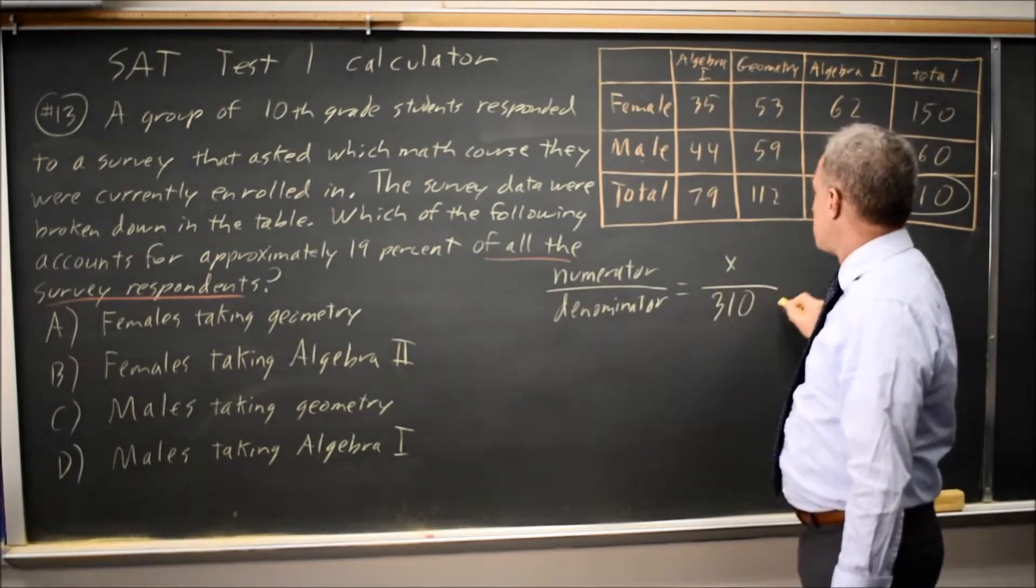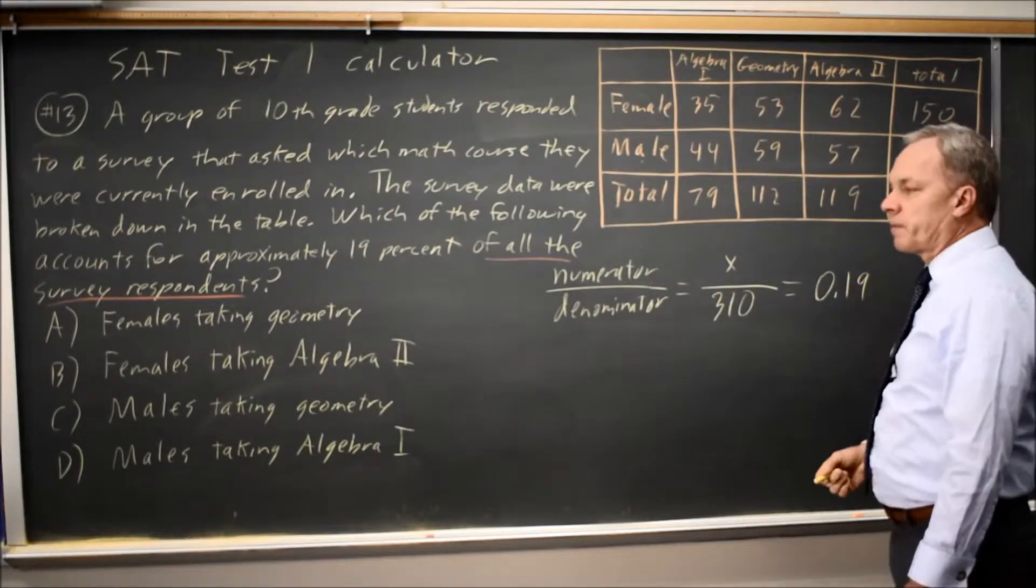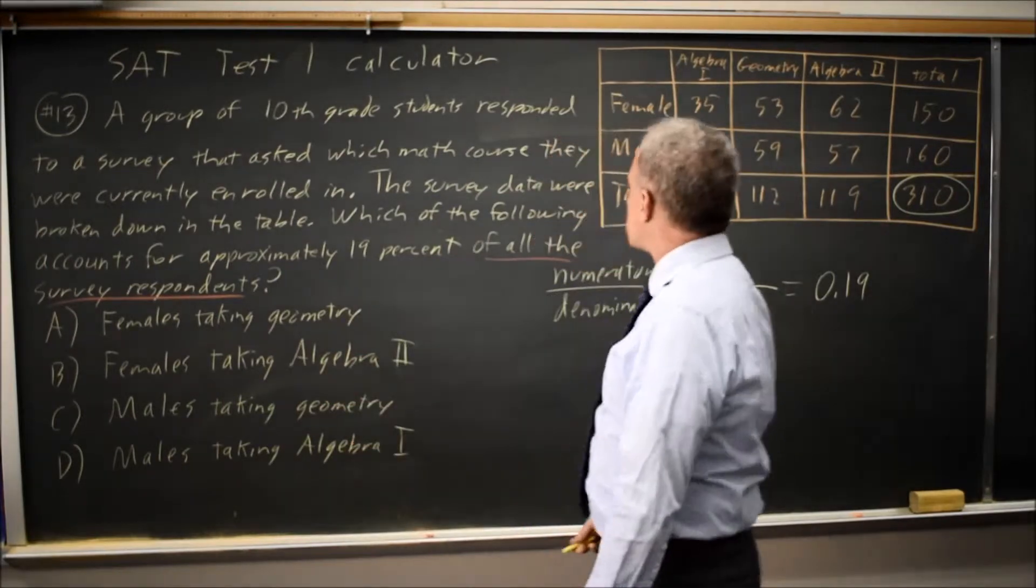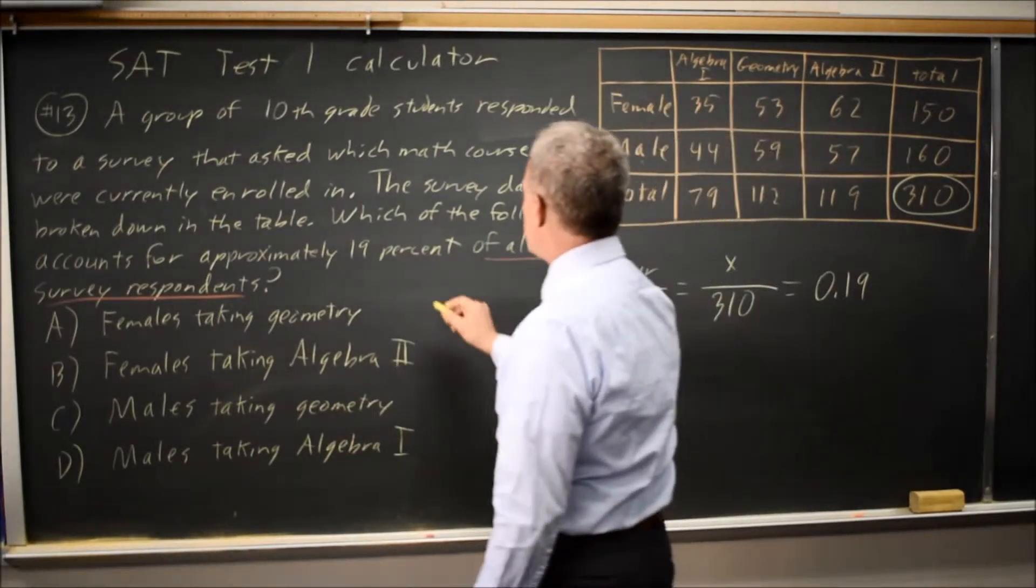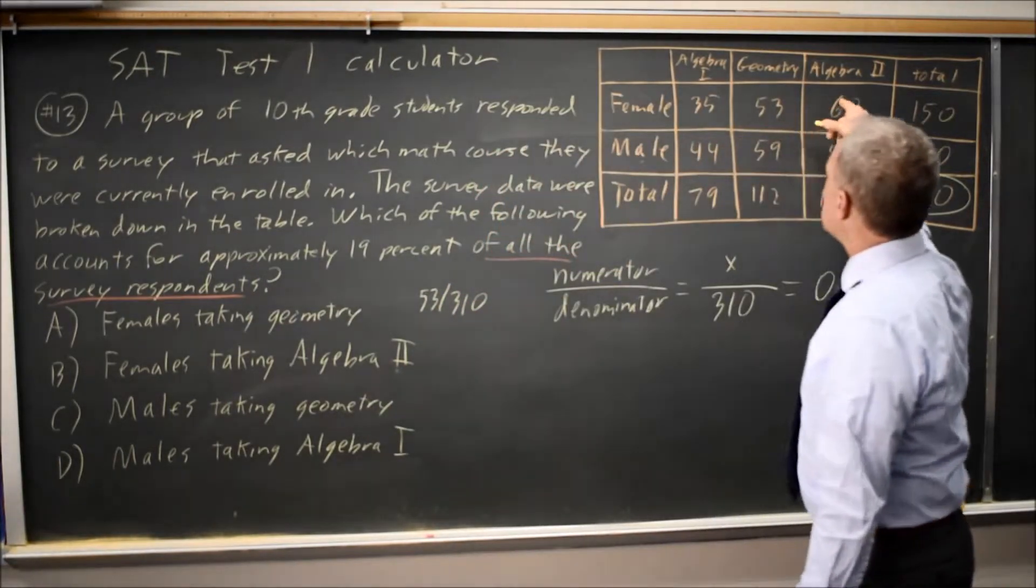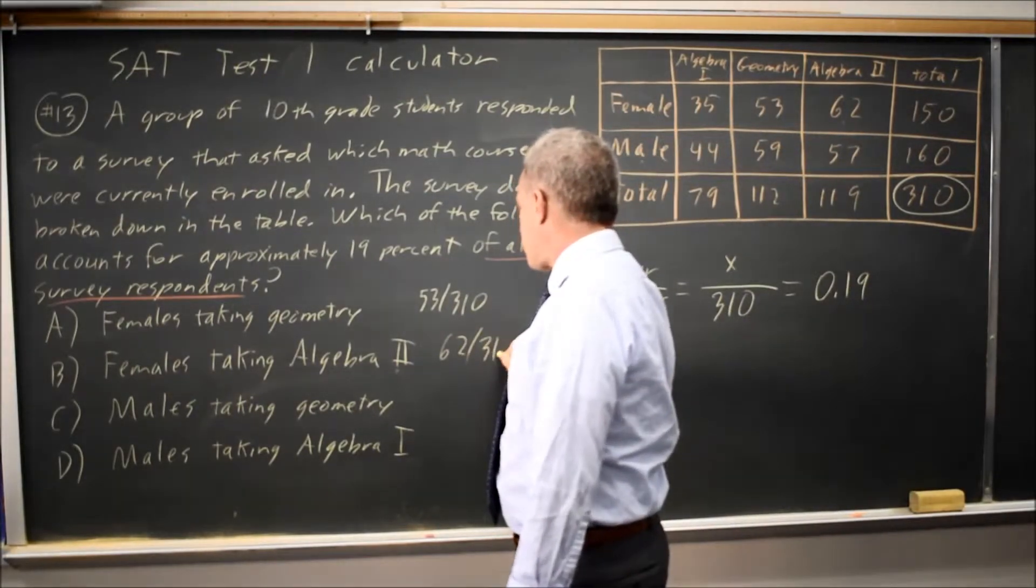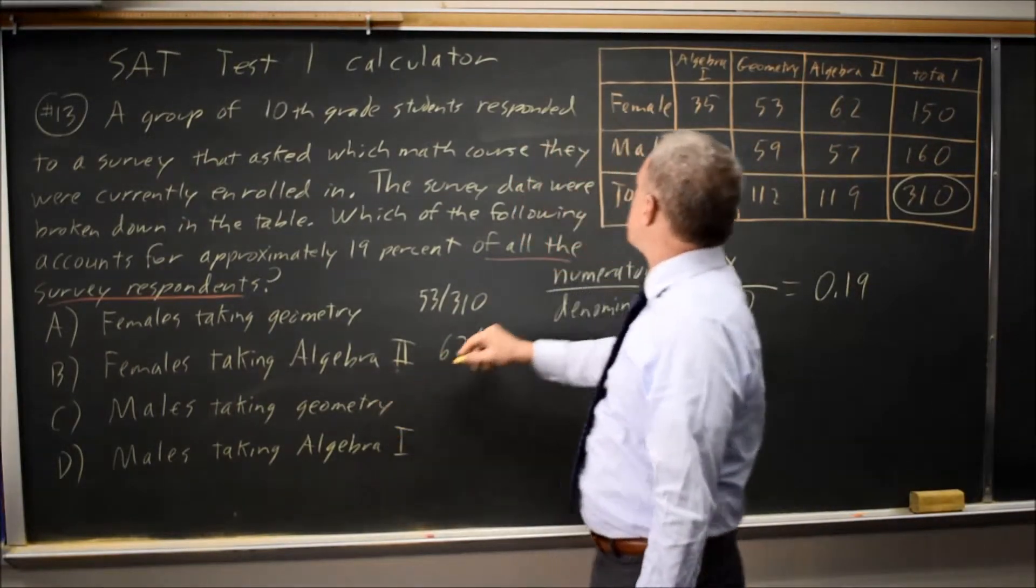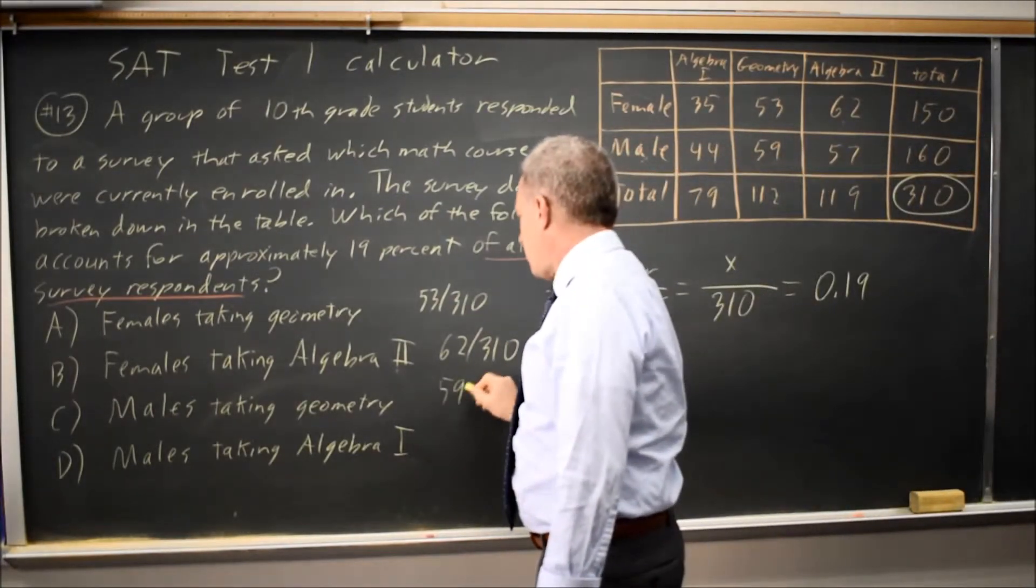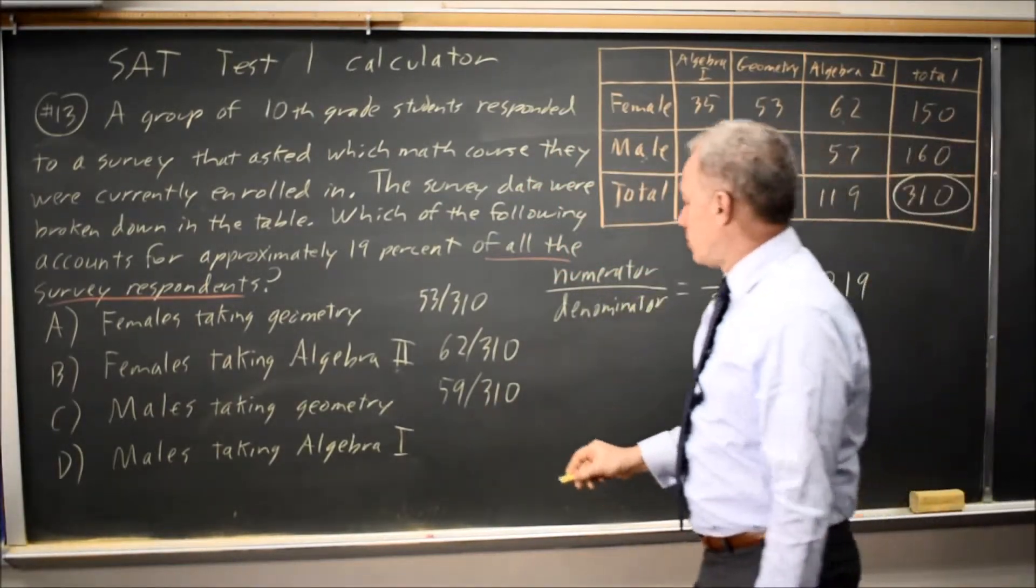Now I need to find the numerator so that that ratio will be 19%. Two options are I can find the ratios for each of these groups. So females taking geometry would be 53 over 310. Females taking algebra 2, female algebra 2 is 62. And my denominator is still 310. Males taking geometry is the second row. Geometry is 59. And my denominator is 310. And then males taking algebra 1 would be 44 over 310.